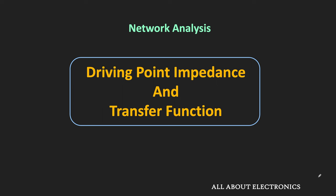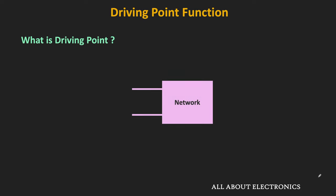We will see that, if we have been given any electrical network, then how to find its driving point impedance and the transfer function. Before understanding driving point impedance, let us first understand what is the driving point. For any electrical network, the driving point is the two terminals of the circuit across which we are connecting the energy source, like a voltage or current source, which then drives the entire network. These two terminals where we connect the source are known as the driving point of the network.